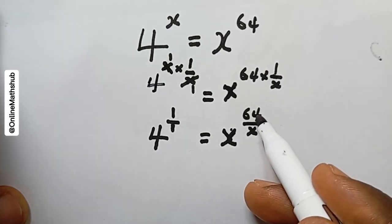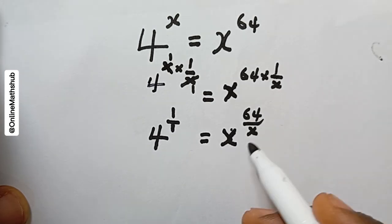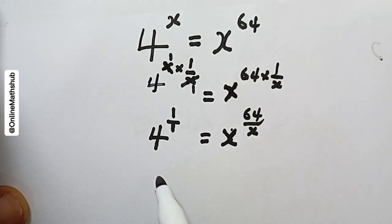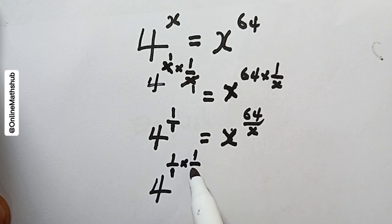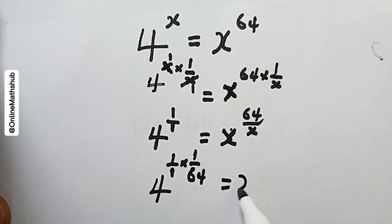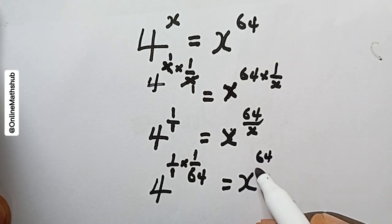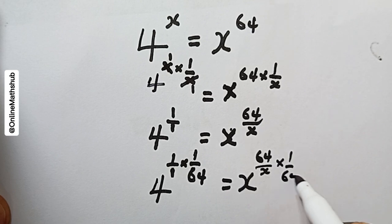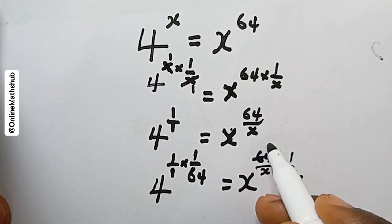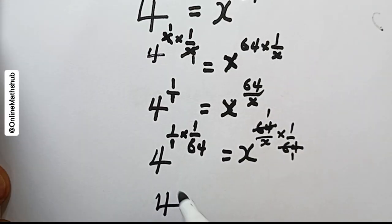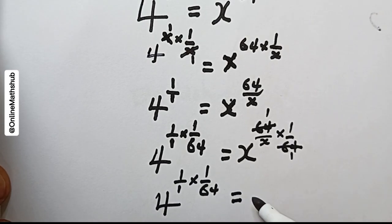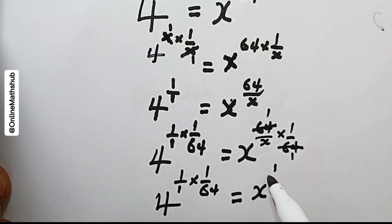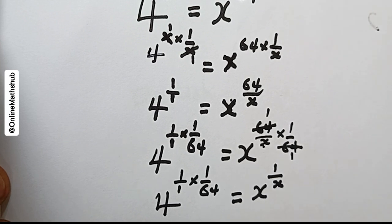Next, I'll remove the 64 so that items containing x are on the right-hand side and other items on the left. I can do that by also raising both sides to the power of 1/64. On the left I have 4^(1/x) multiplied by 1/64, and on the right x^(64/x) multiplied by 1/64, which simplifies to x^(1/x).